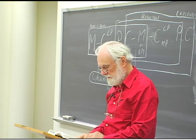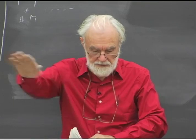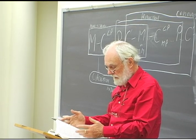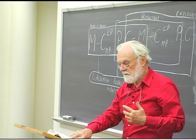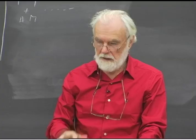A little further down, MC breaks up into ML — money into labour power — and M to MP, which is means of production. So the money is divided into two portions, one flowing in each direction. Once the capitalist has purchased those elements, they're in a position to move towards production. At page 1.112, money appears as the original bearer of the capital value, and hence money capital appears as the form in which capital is advanced. He then undermines that by saying that as money capital, it exists in a state in which it can perform only monetary functions.